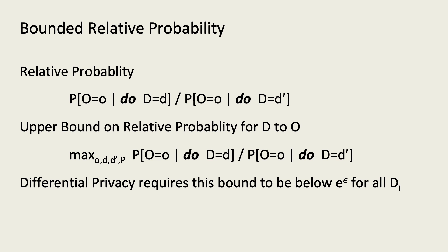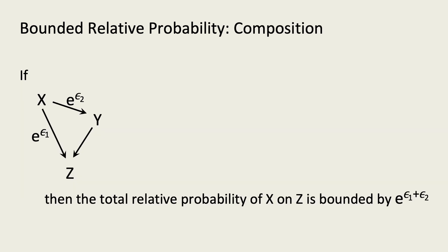Differential privacy is an upper bound on this measure across all the possible data points, pairs of values they can take on, outputs, and distributions over other data points. Like differential privacy, relative probabilities compose additively in the exponent.